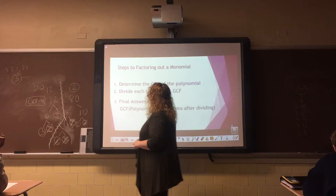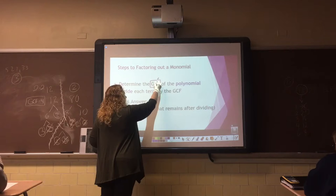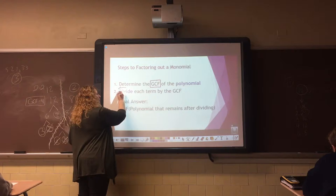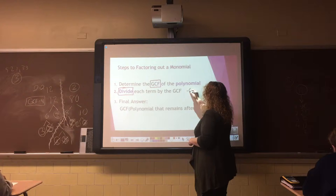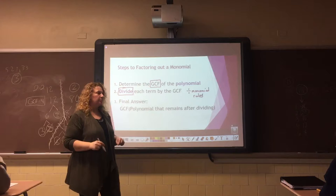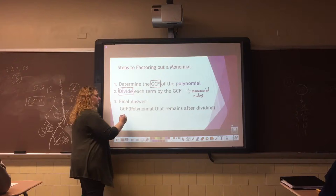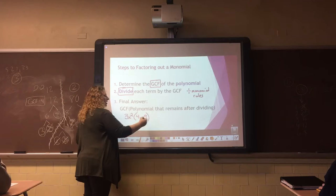Now let's look at the steps to factoring out a monomial. Step one: determine the GCF of the polynomial — that's what we just did. Step two: divide each term by the GCF, using our divide monomial rules from chapter seven. Step three: take that information and write the final answer. Your final answer will be the GCF followed by the polynomial that remains after dividing. For example, if 3x squared is our GCF and 4x minus 9 is our polynomial, it looks like 3x²(4x − 9).